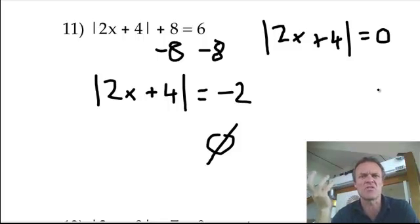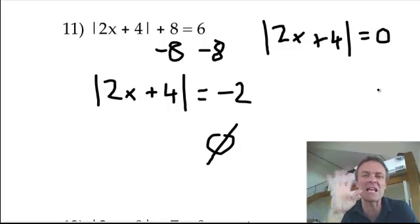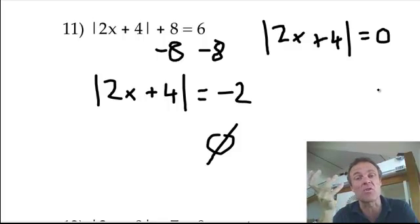You can't do 1 plus 0 and 1 minus 0. All it is is forget about the absolute sign. That's just 2x plus 4 equals 0, and then just solve for x. Just one answer.